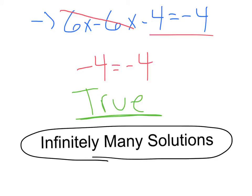So, that's our special case number 1. If you end up getting rid of all your variables, getting something that is true, we have infinitely many solutions.